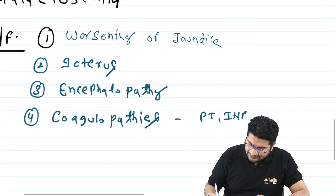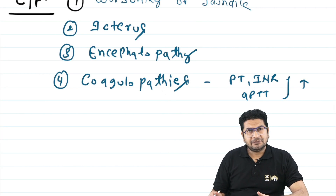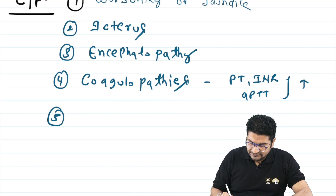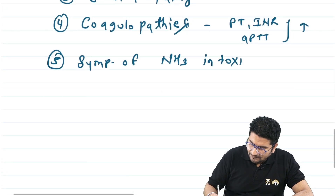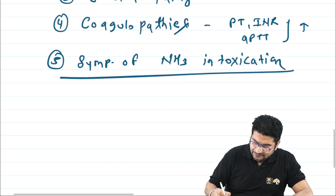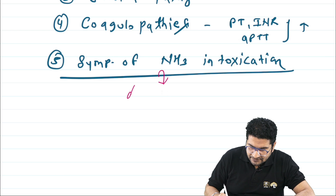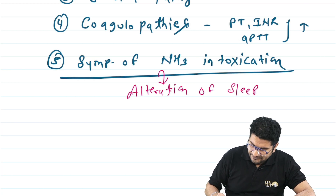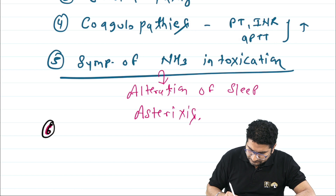Coagulopathy is present: PT-INR and APTT may be increased. Bleeding is not usually seen but can occur. Along with encephalopathy, there will be symptoms of ammonia intoxication. These symptoms start with altered sleep — the patient hasn't been sleeping for days — followed by flapping tremors, which we call asterixis.